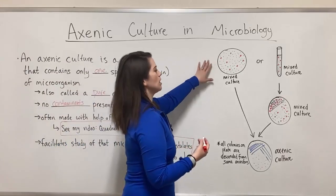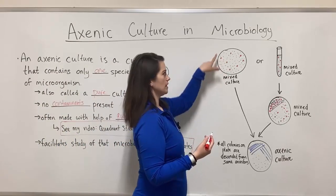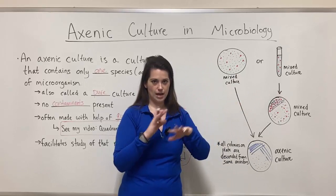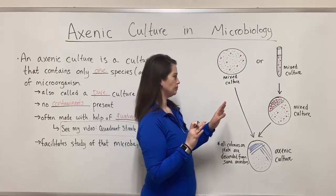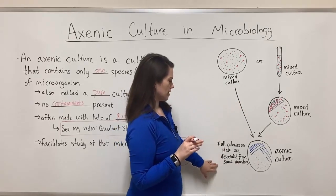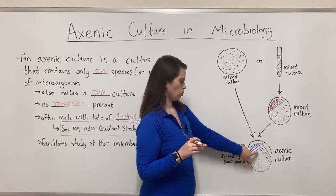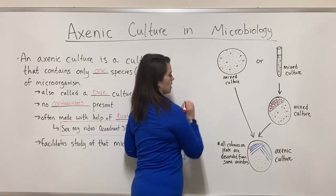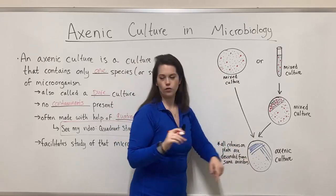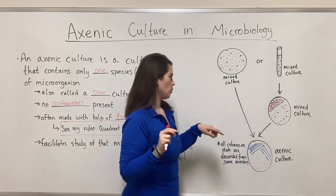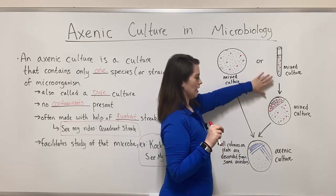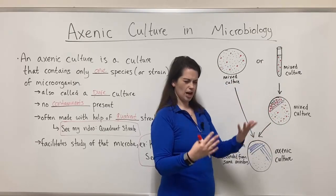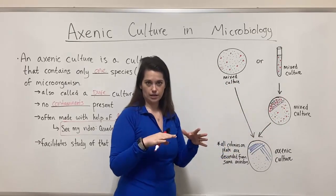Basically what it looks like is you've got some kind of mixed culture. Maybe it's on a petri dish where you can see the individual colonies. Maybe it's in a mixed culture where you just kind of see the cloudy broth and you can't distinguish the different isolates that are in there. But the goal is to get an axenic or pure culture where there's only one species growing on a plate. If you're starting with a plate, it's easy enough to just select one colony and transfer it over in a quadrant streak. If you have a mixed culture, you really have to get it onto a plate where you can see all the different types of colonies that are present, each type of colony being for different isolates, different species.